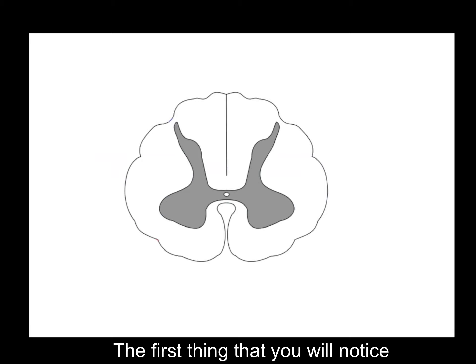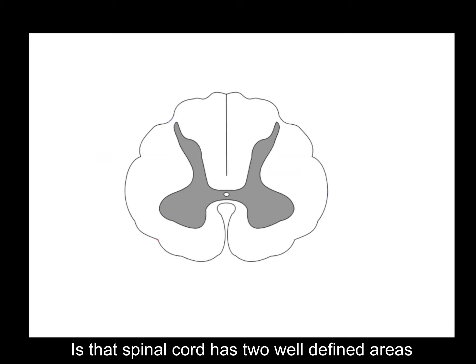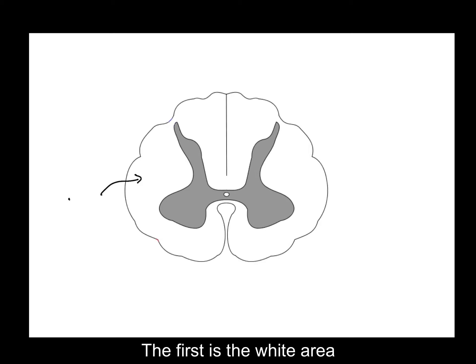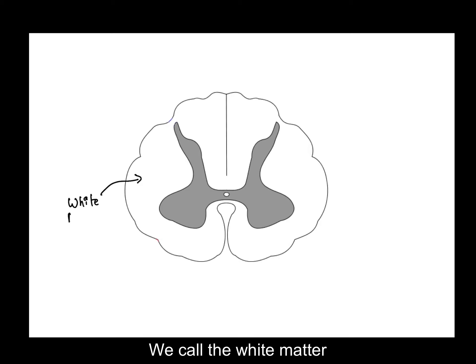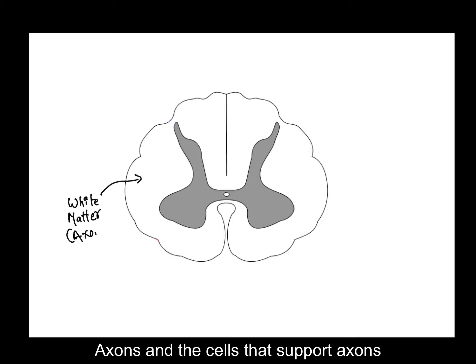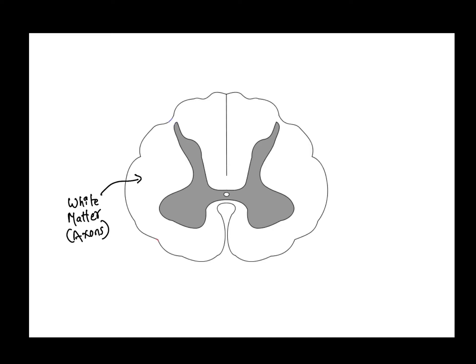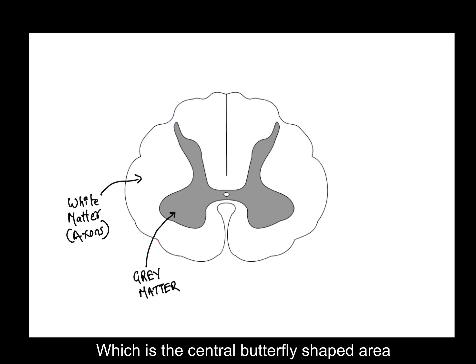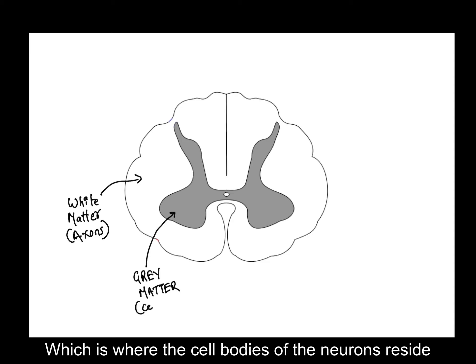The first thing you will notice is the spinal cord has two well-defined areas. The first is the white area around the outside, which we call the white matter. The white matter is mainly composed of axons and the cells that support axons. The second is the grey matter, which is the central butterfly-shaped area where the cell bodies of the neurons reside.